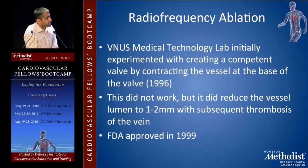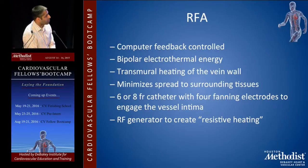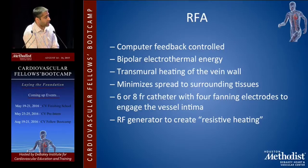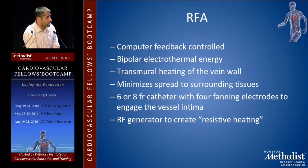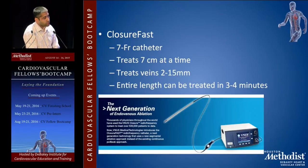Radiofrequency ablation: Venus Medical Technology Lab initially experimented with creating a competent valve — it didn't work too well. The FDA approved radiofrequency ablation in 1999. Advantages include computer feedback control, bipolar electrothermal energy, transmural heating of the vein wall, and minimized spread to surrounding tissue. Uses a 6 or 8 French catheter with fanning electrodes to engage the vessel intima. The ClosureFast system — most commonly used — uses a 7 French sheath, treats 7-centimeter segments at a time, treats vein diameters between 2 and 15 millimeters, and can treat the entire vein in about 3 to 5 minutes.